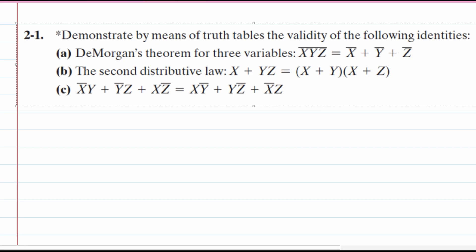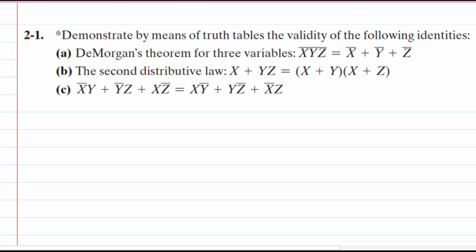We're going to demonstrate, by means of truth tables, the validity of the following identities. We are first going to start off with A. This is De Morgan's theorem for three variables.